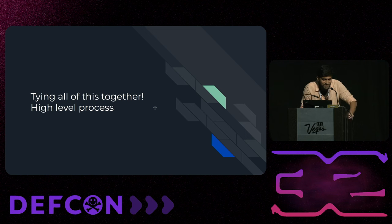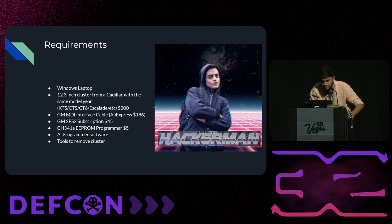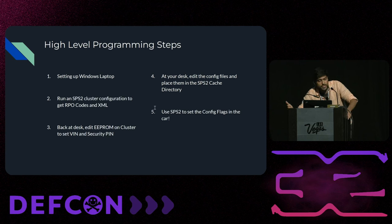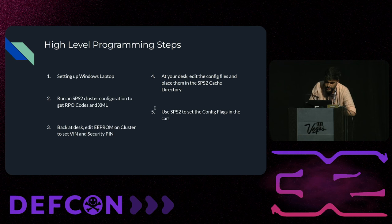Tying this all together — high-level process. There's a list of requirements I won't read out. The high-level programming steps are: set up your Windows laptop, run a cluster configuration with your OEM cluster just to get the RPO codes and XML files out, edit the EEPROM on the cluster as I explained, edit the cache files locally, and then just run the configuration again. And that's it.